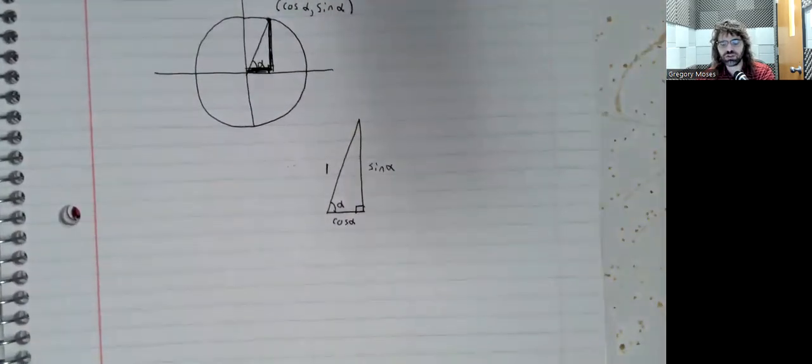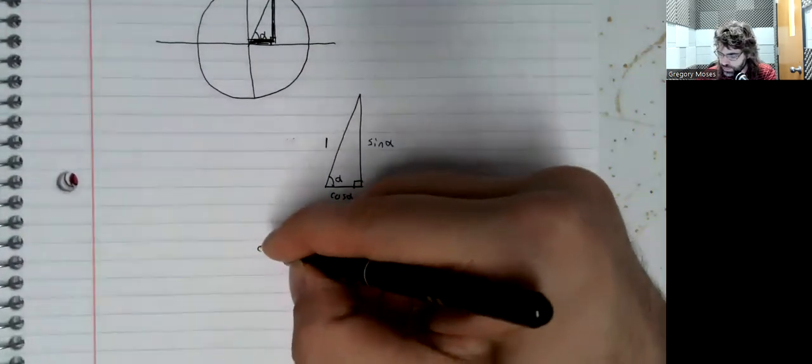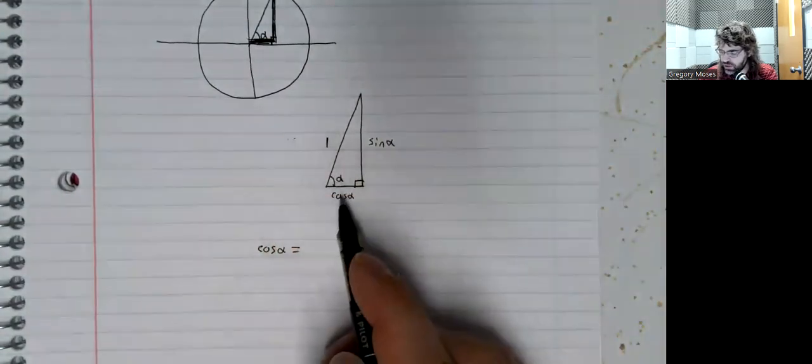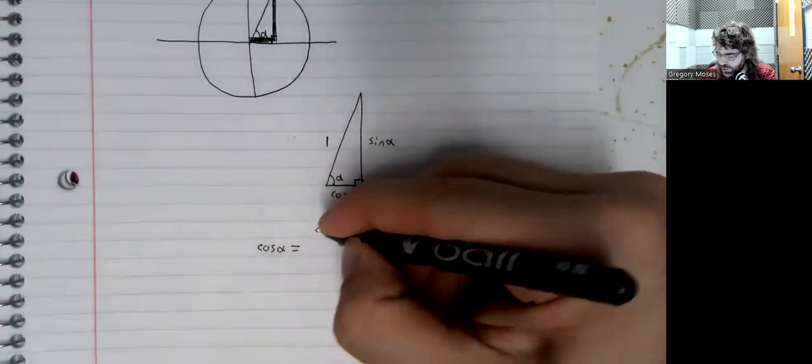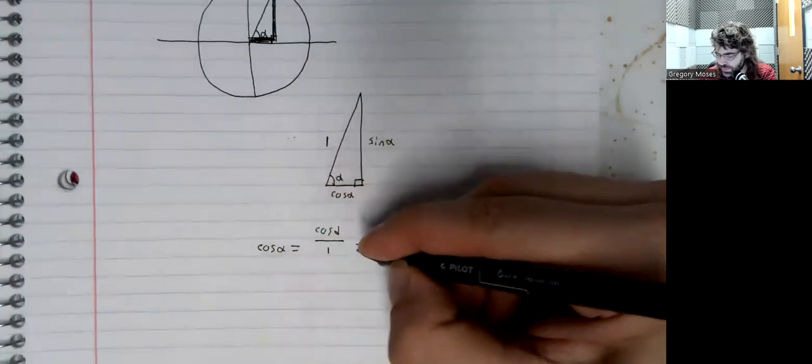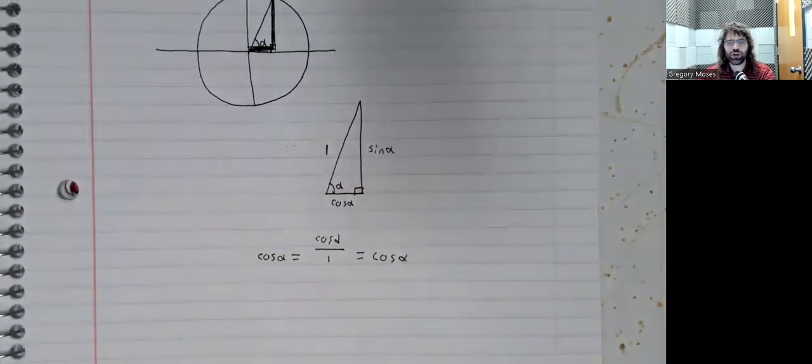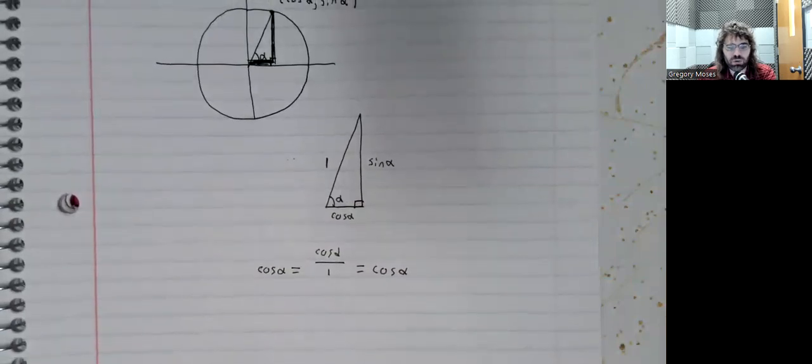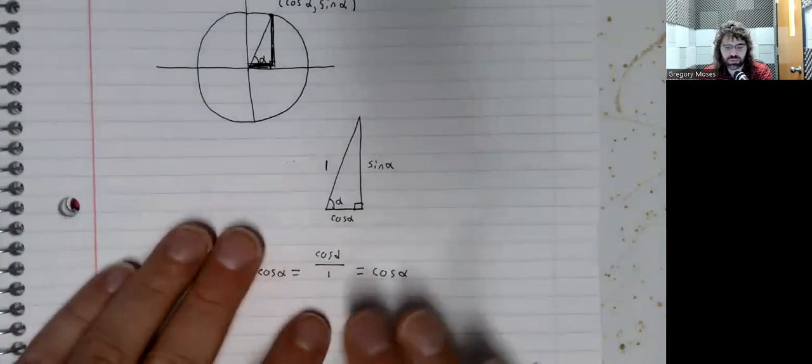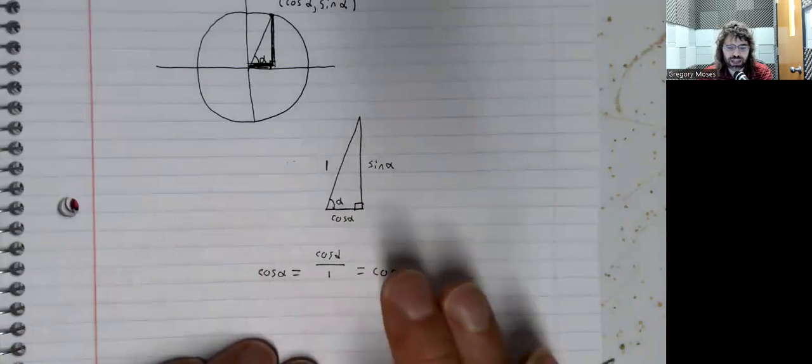And we can see the cosine of alpha is the cosine of alpha divided by 1. The cosine of alpha is the cosine of alpha. That is to say, the definition of the cosine that uses the right triangle.